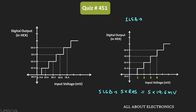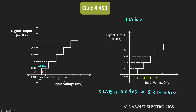But if you look at the transfer characteristic of the given ADC, it is left shifted by 0.5 LSB. Since 1 LSB corresponds to 19.6mV, dividing that by 2 gives 9.8mV. So this transfer characteristic is right shifted by 0.5 LSB. Therefore, if we represent the input in terms of LSB, this is how it will look.